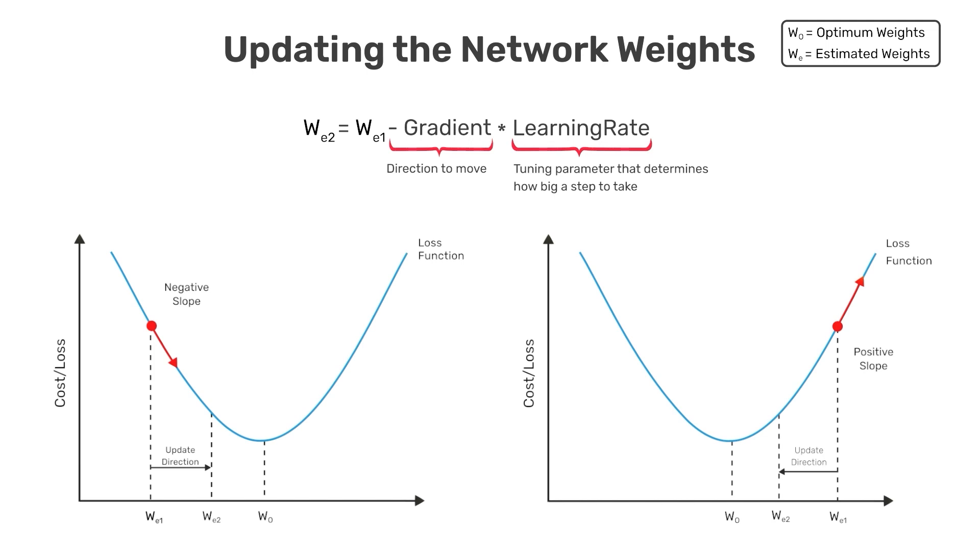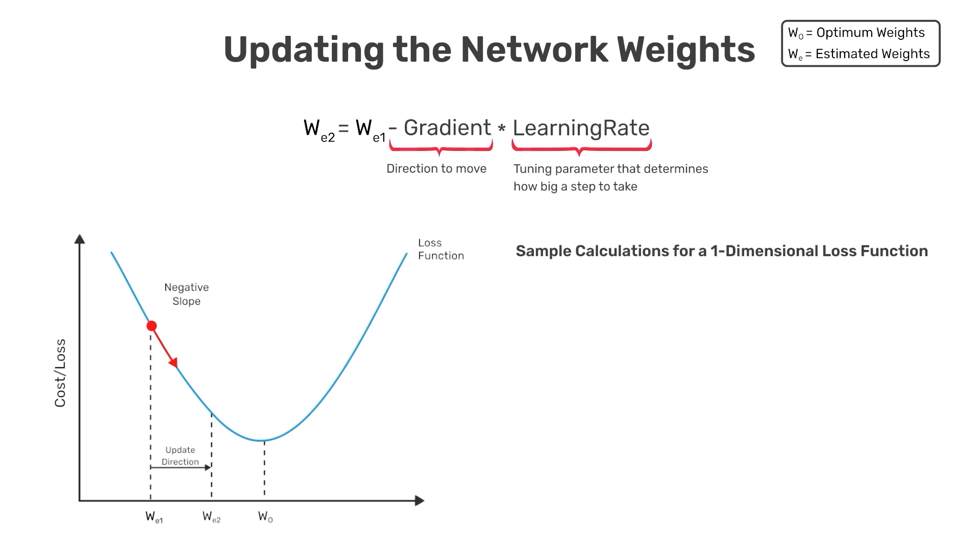To make this a little more concrete, let's take a look at the plot on the left and do a sample calculation for updating the weight. Here, let's assume that the current weight is referred to as W_E1, which has a value of 0.38. And we'll also assume that we have a learning rate of 0.01 and that the slope of the loss function at the point W_E1 is equal to minus 0.55.